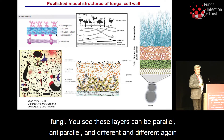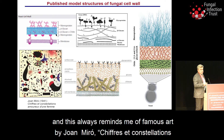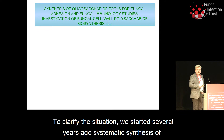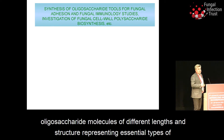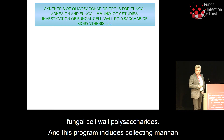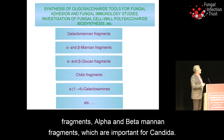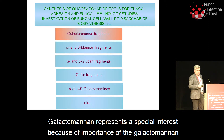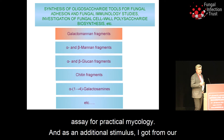You see these layers can be parallel, anti-parallel, and different, and this always reminds me of the famous artwork by Juan Miró, which looks very similar to the structure of the fungal cell wall. To clarify the situation, we started several years ago a systematic synthesis of oligosaccharide molecules of different lengths and structure representing essential types of fungal cell wall polysaccharides. This program includes galactomannan fragments, alpha- and beta-mannan fragments which are important for Candida, alpha- and beta-glucan fragments, chitin, galactosaminogalactans, and some others.